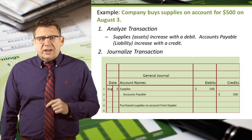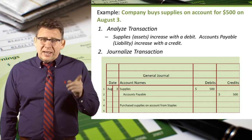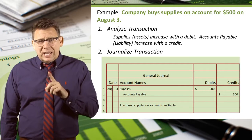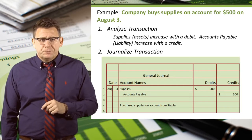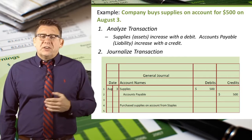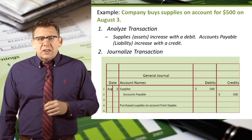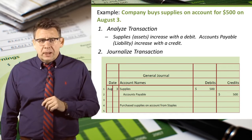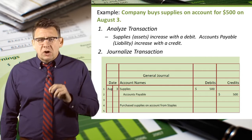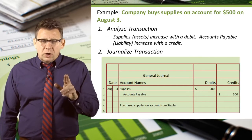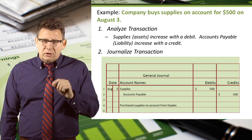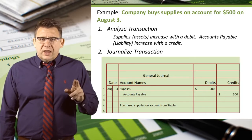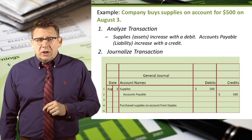When we analyzed this transaction, we determined that supplies, an asset account, is increased with a debit, and accounts payable, a liability account, is increased with a credit. So first we enter the date, August 3rd. Then we list the debit account first, so we enter supplies. It wouldn't technically be wrong to list the credit account first, but it would look wrong to every practicing accountant, so always enter the debit accounts first. Then we record $500 in the debit column.